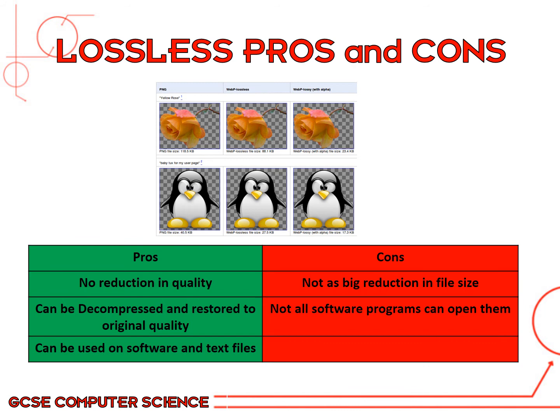There are ways to do this which you'd explore at A-level. For example, dictionary encoding — you might take a Word document and give certain words numbers instead of the full word. Say the word 'encyclopedia' is used 15 times in a document; you replace it with a number, making the file a lot smaller. Then a dictionary restores all the words back to their original form when you decompress it, so all the quality stays the same.